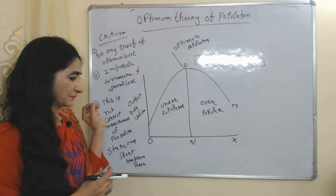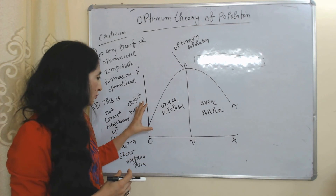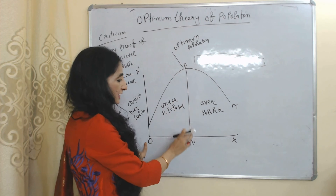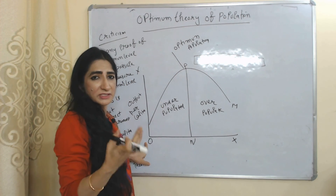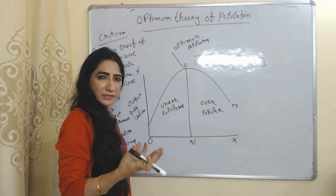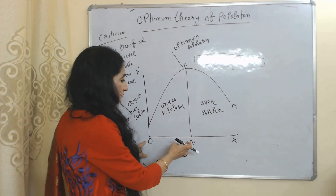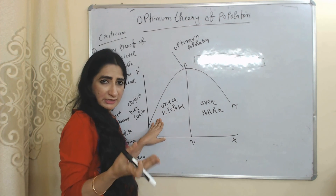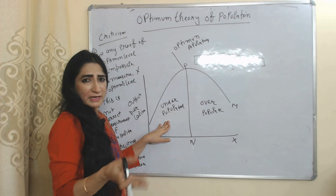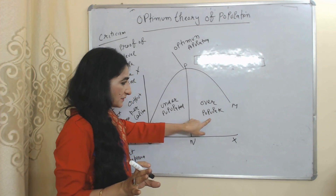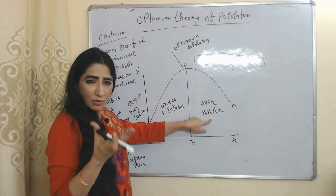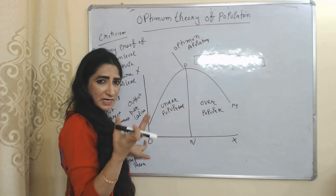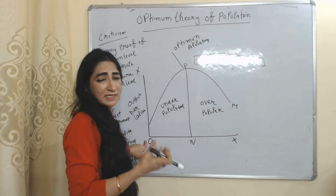Now we will see the diagram of this theory. On the x-axis we have population and on the y-axis we have output per capita. ON population shows the optimum level — the most desirable size of population — where resources are properly utilized and per capita income remains high. Before ON is the under-populated area where resources are more than population, so resources are not properly utilized and per capita income remains low. After ON, resources are less than population, resources are over-utilized, and per capita income remains low.